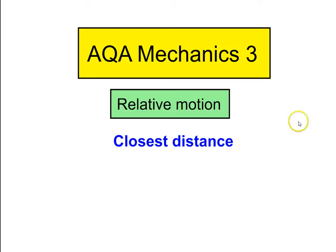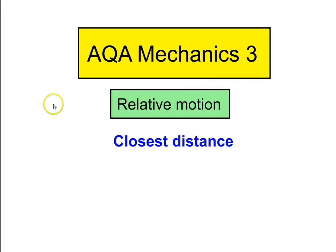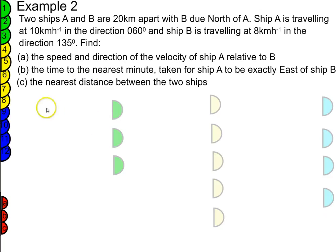Hi, this is a second video on relative motion, dealing particularly with closest distance. It's aimed at AQA Mechanics 3, but it would be useful to anybody who's interested in relative motion. If you haven't watched the first video, I suggest you go back and do that. What we're going to do this time is have a look at a second, slightly different example.